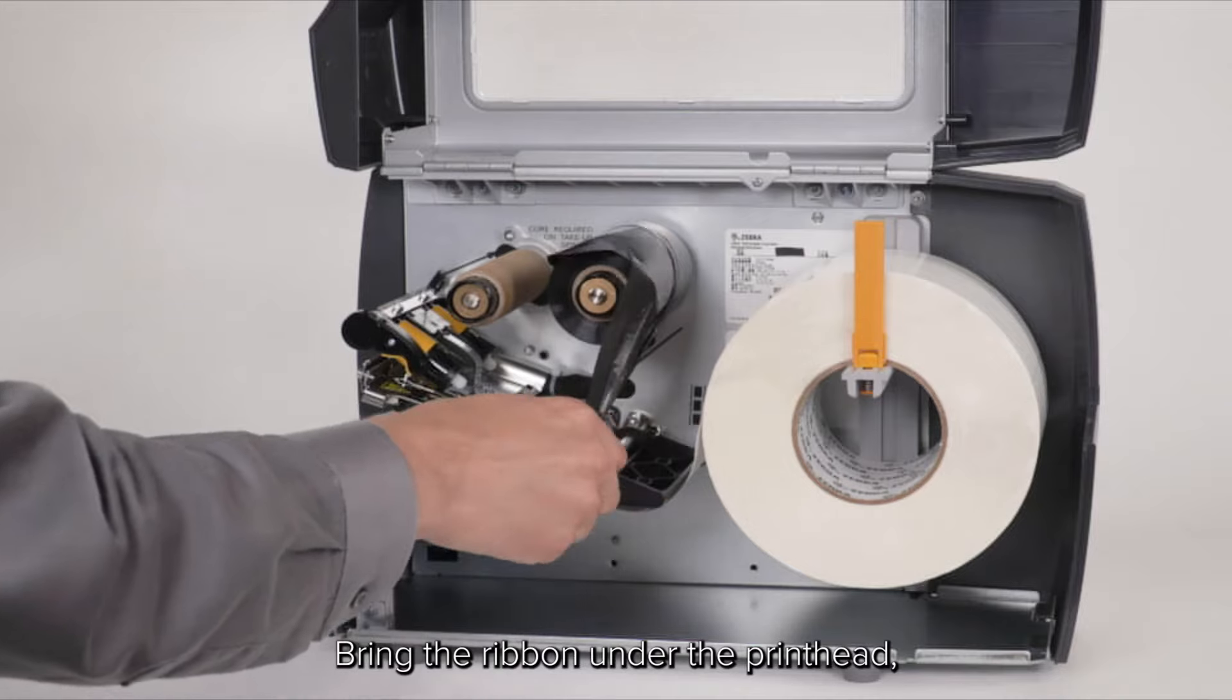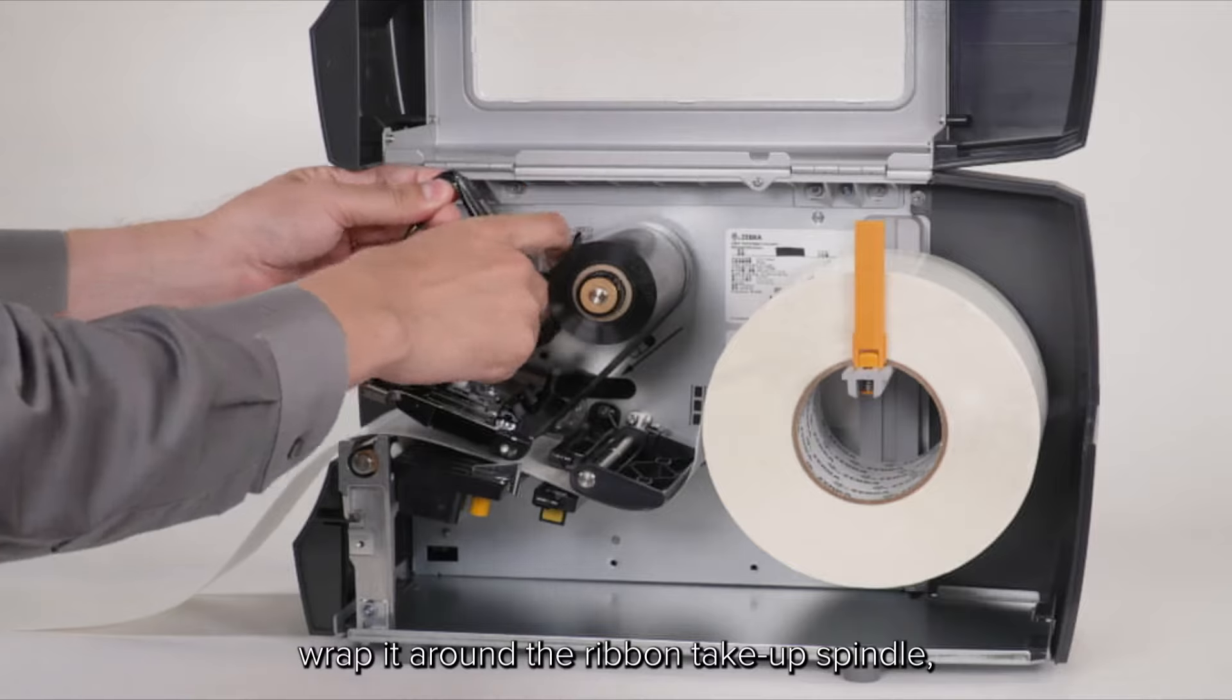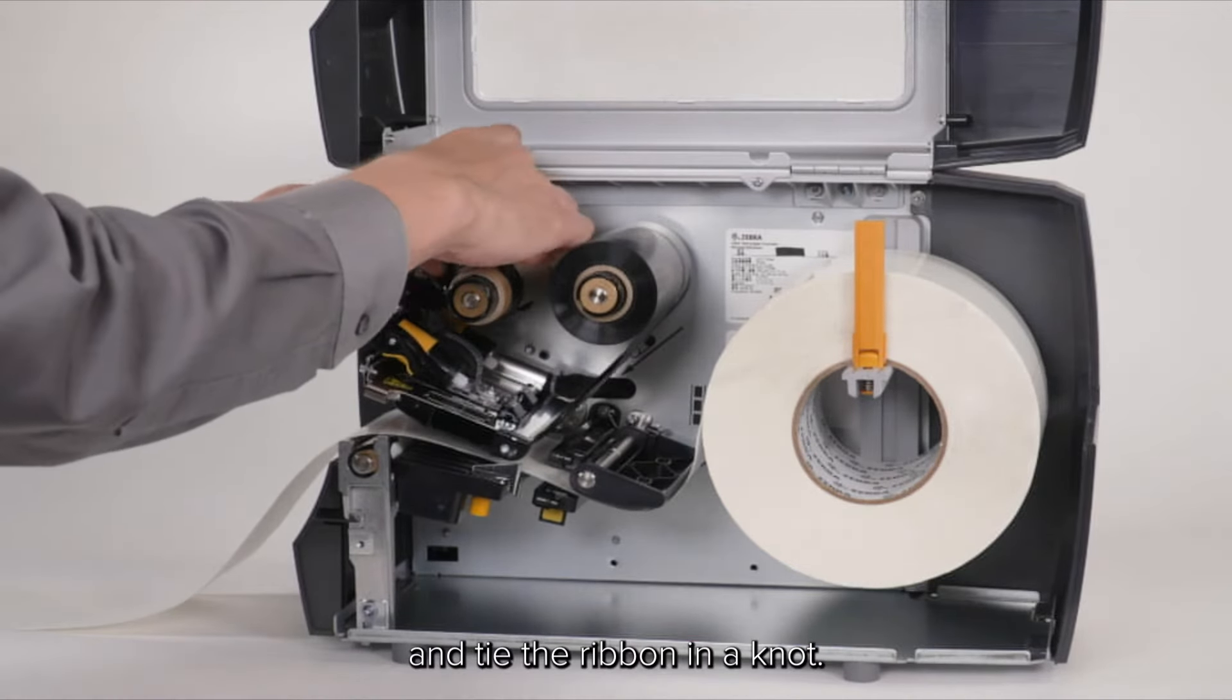Bring the ribbon under the printhead, wrap it around the ribbon take-up spindle, and tie the ribbon into a knot.